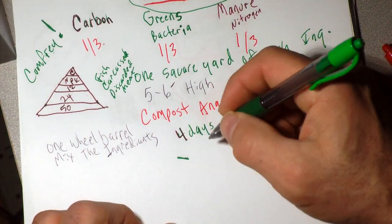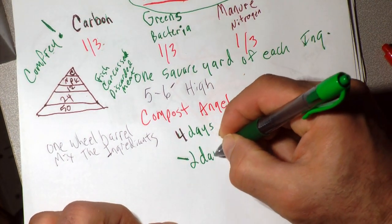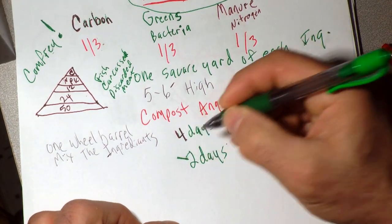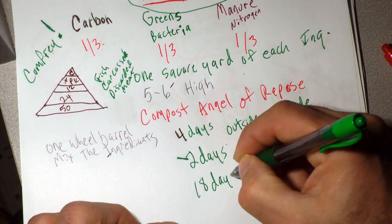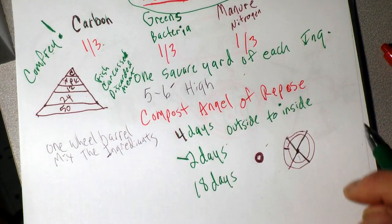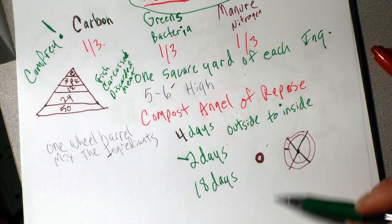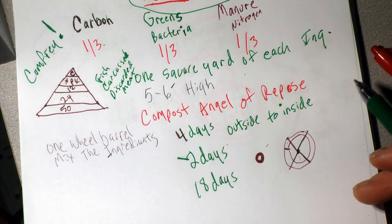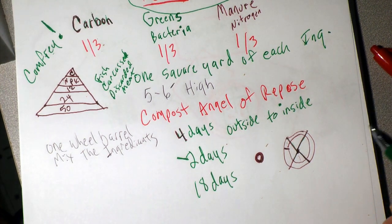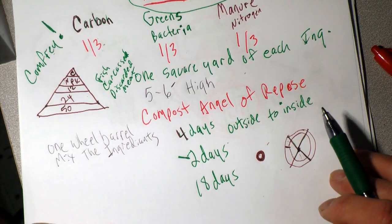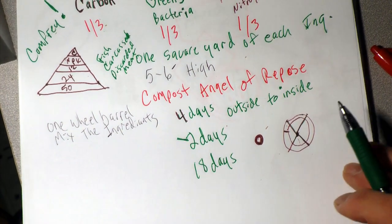After the first four days, you're going to flip it every two days until it's finished. It should be finished in 18 days if you don't add anything. I've been doing a lot of experimenting where I continue to add material because I want more elements in the pile, and I've had it going for close to two months before it finally lost its energy.